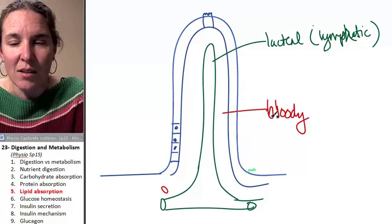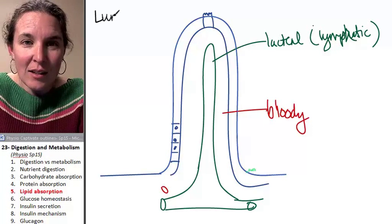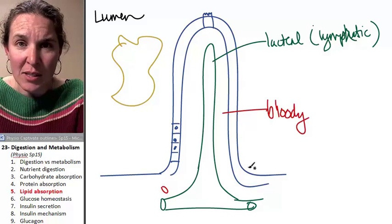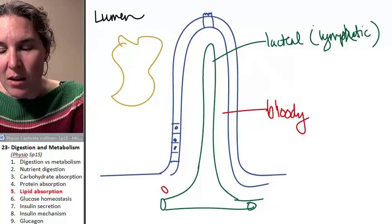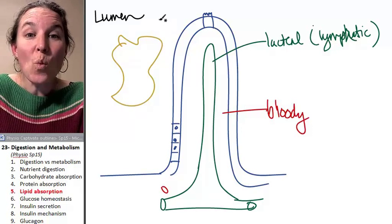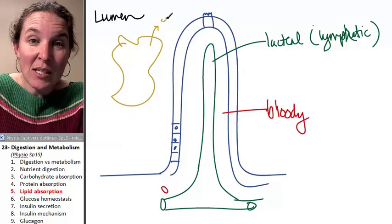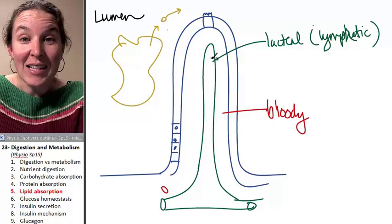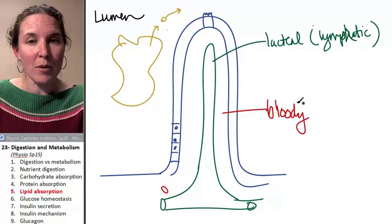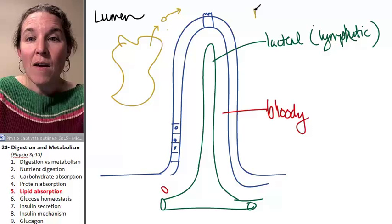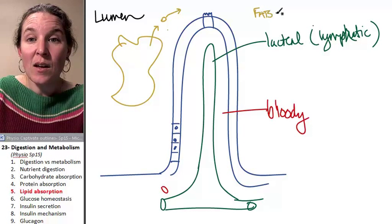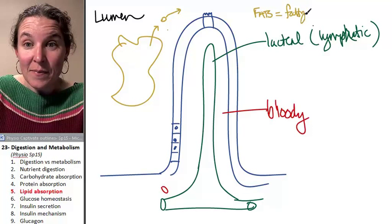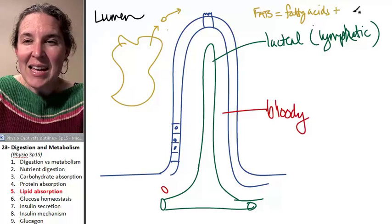Fat in my lumen. Don't forget fat globs are going to glob together in globs. And so you have to have bile come in and break up the globs. And once the bile comes in and breaks the globs into smaller globs, then you're going to have lipases that are going to break your fats into their component parts. You remember this from bio one. Fats are made of fatty acids and glycerol.